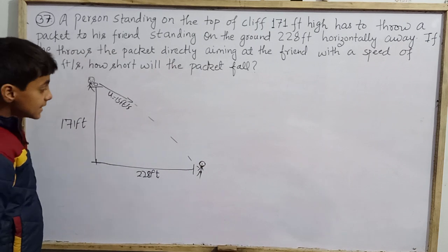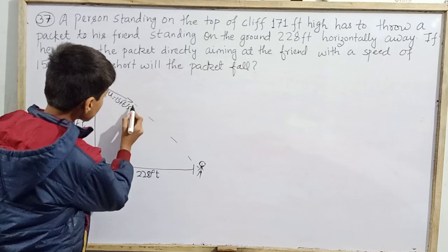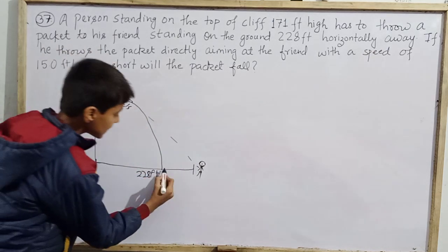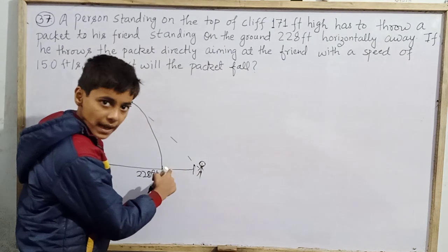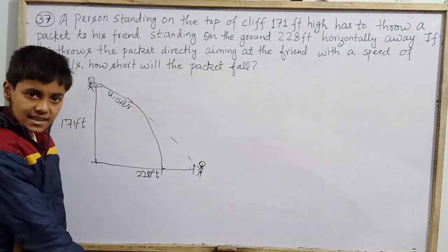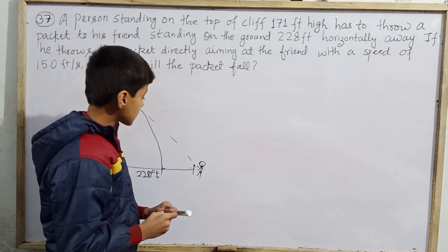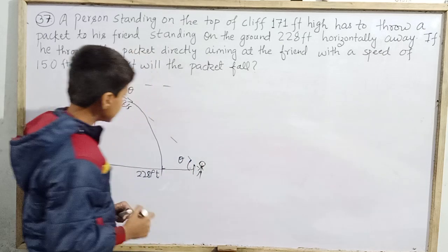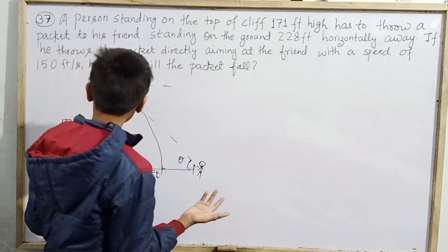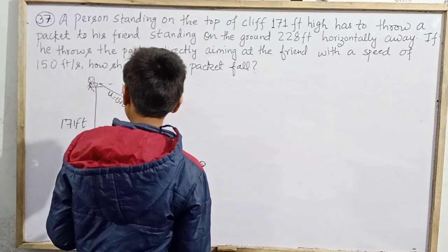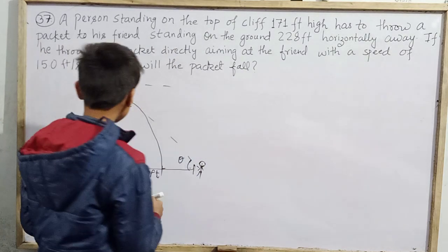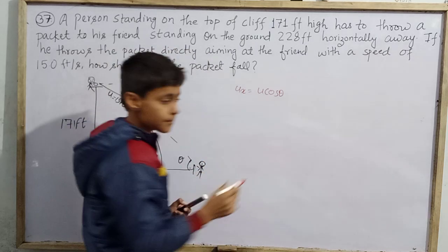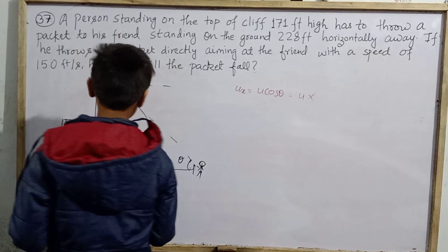The person throws at 15 feet per second, directly aiming at the friend. Due to gravity, the packet curves downward, so it won't reach the friend — we need to find how far short it falls. Suppose the angle of aim is theta. For this situation, the x component of velocity is u·cos θ. We don't know cos θ directly, so we need to find it from the geometry.